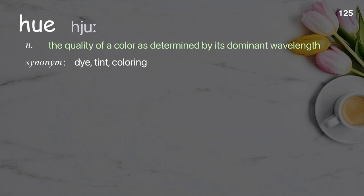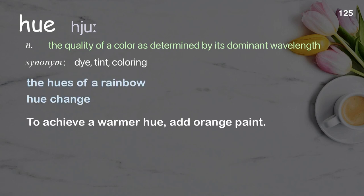Hue: the quality of a color as determined by its dominant wavelength. Examples: the hues of a rainbow, hue change. To achieve a warmer hue, add orange paint.